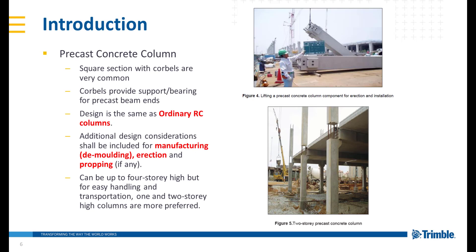Precast concrete column. Square section with corbels are very common. The corbels provide support and bearing for the precast beam ends. The design is the same as ordinary RC columns. Additional design considerations shall be included for demoulding, erection and propping. It can be up to 4 storey high, but for easy handling and transportation, 1 and 2 storey high columns are more preferred.